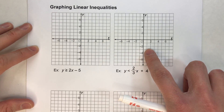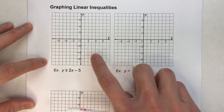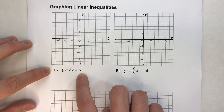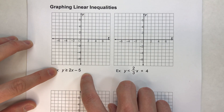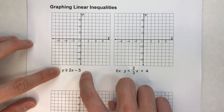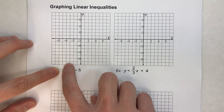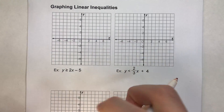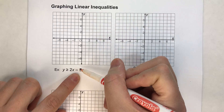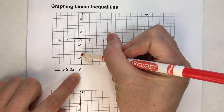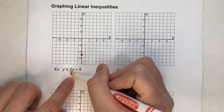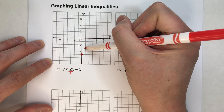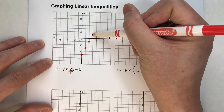I'll give you four examples so you can see this in action. First one: y is greater than or equal to 2x minus 5. The first thing we want to do is graph the boundary line — meaning, pretend this is y equals 2x minus 5. My y-intercept would be negative 5. My slope is 2, or 2 over 1. So from here I go up 2, right 1, over and over again.